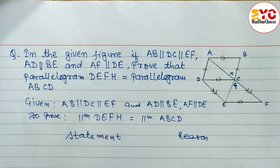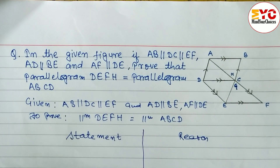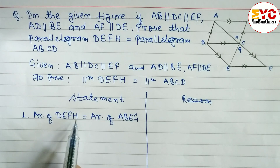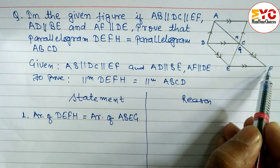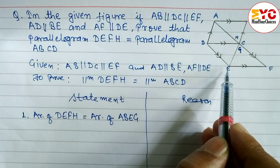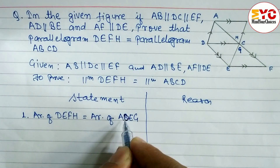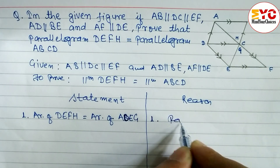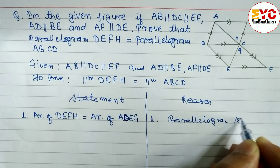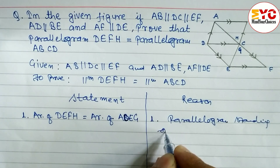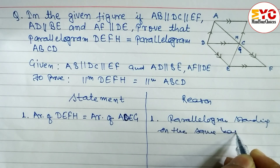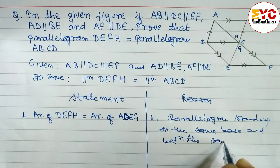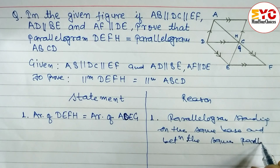Draw a box and write statement and reason. In statement number one: area of parallelogram DEFH is equal to area of parallelogram ADEG. Reason number one: parallelograms standing on the same base and between the same parallel lines.